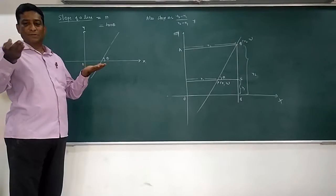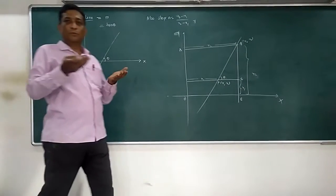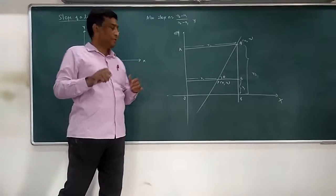For a horizontal line, there cannot be slope. Inclination is zero, so slope will be zero.